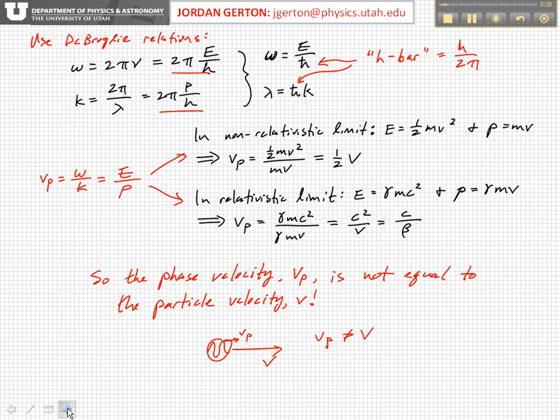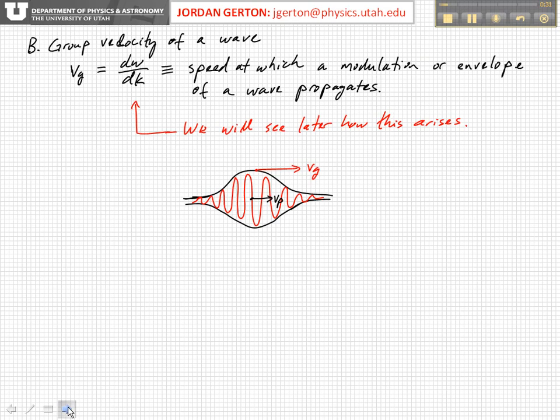Next, there's another velocity that we can define in terms of waves called the group velocity. The group velocity is defined to be the derivative of the angular frequency omega per unit wave number, so it's dω/dk. And we'll see later where this comes from. I'm not going to derive it now, but we'll see in a lecture or two where this comes from.